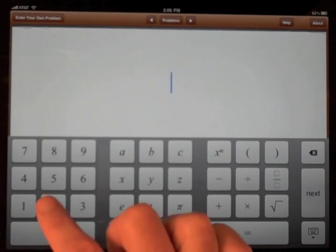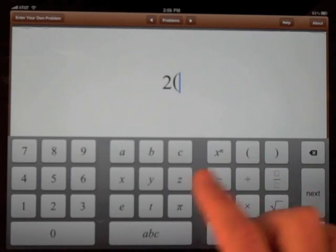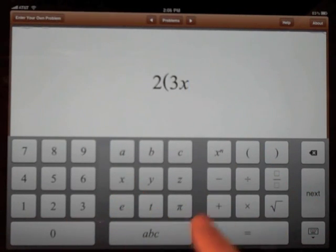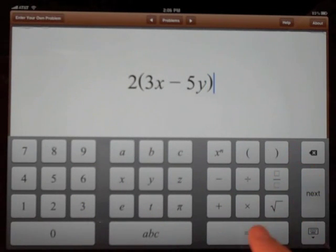Let's try 2 times the expression 3x minus 5y equals 0.